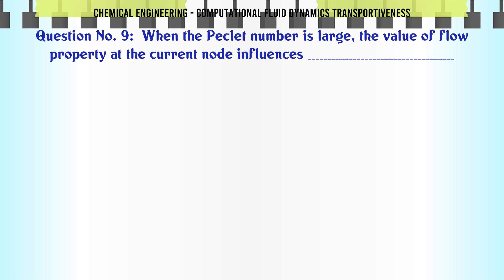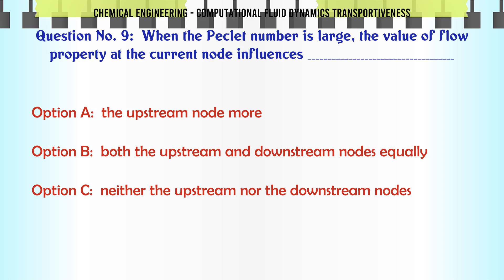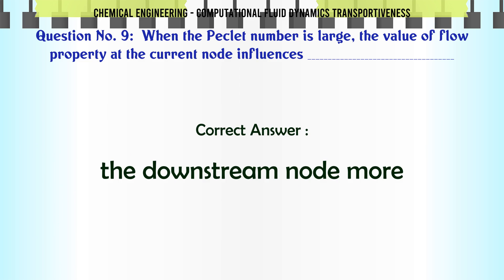When the Peclet number is large, the value of flow property at the current node influences: A. The upstream node more. B. Both the upstream and downstream nodes equally. C. Neither the upstream nor the downstream nodes. D. The downstream node more. The correct answer is the downstream node more.